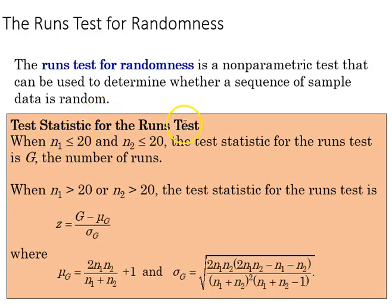So the test statistic when the sample size 1 is less than or equal to 20, and also the sample size 2 is less than or equal to 20, the test statistic is G, which is going to be the number of runs.